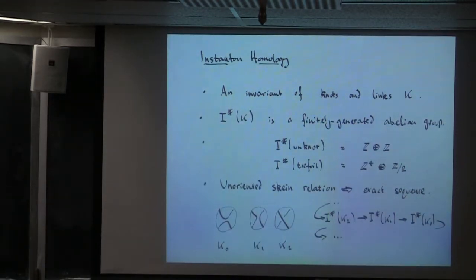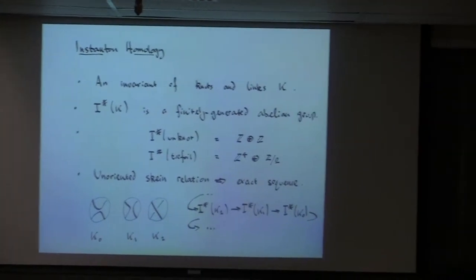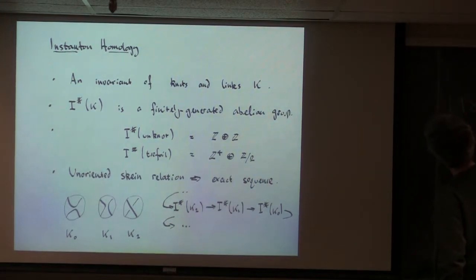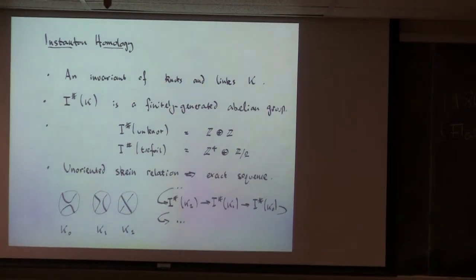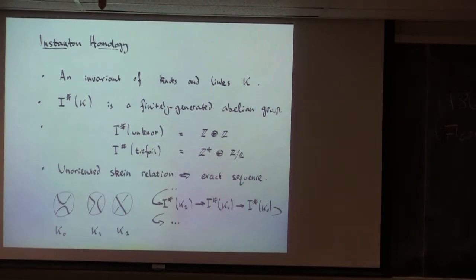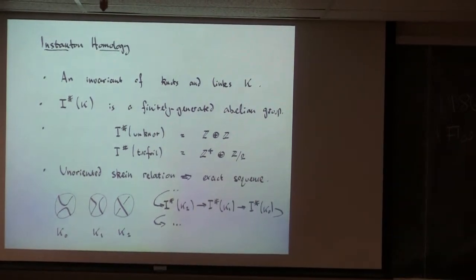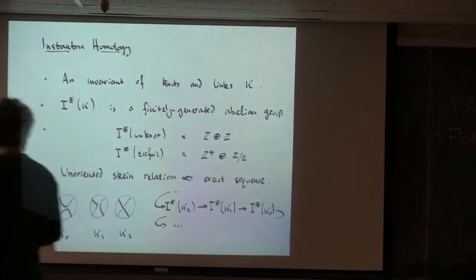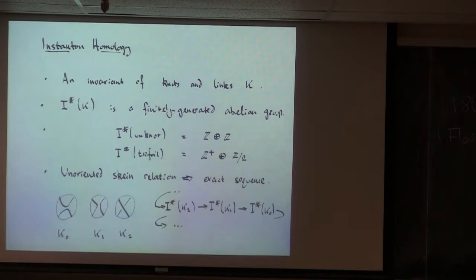The situation here is a three-manifold Y. I'm going to talk about an invariant of knots and links which may lie in a three-manifold but will usually for me lie in R3. This is a variant of the Floer homology which goes back to 1986. What is this instanton homology going to be? It's going to be a finitely generated abelian group. For the unknotted circle in R3 it'll be Z plus Z. For the trefoil I've written down the answer: it's four copies of Z and a Z mod 2.